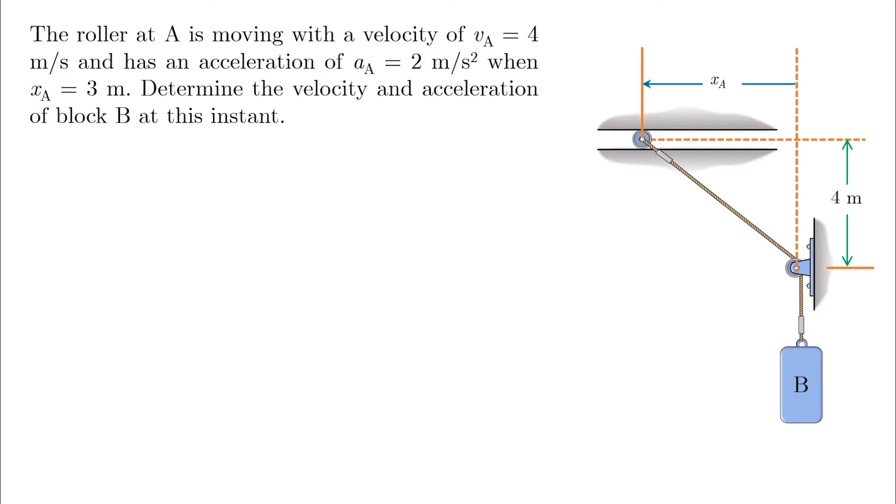The roller at A is moving with a velocity of vA equals 4 meters per second and has an acceleration of aA equals 2 meters per second squared when xA is equal to 3 meters. Determine the velocity and acceleration of block B at this instant.